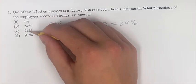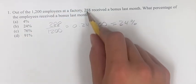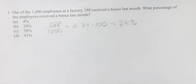The answer choices—4%, 24%, 76%, and 91%—are very different values, so changing this number a little bit isn't going to change the overall solution very much.